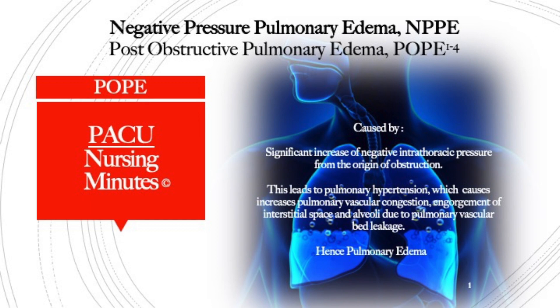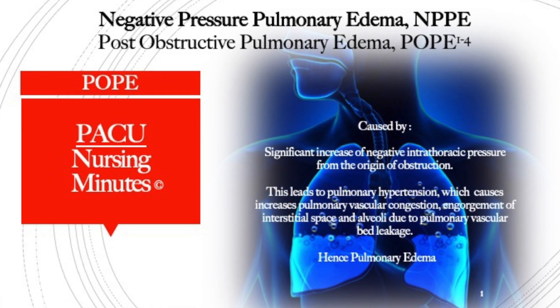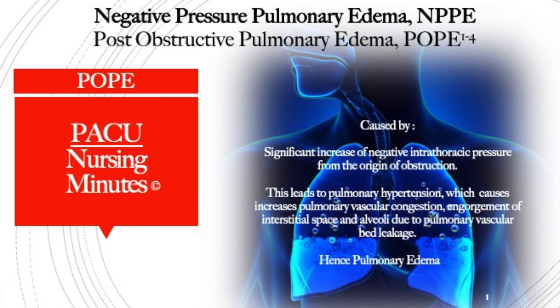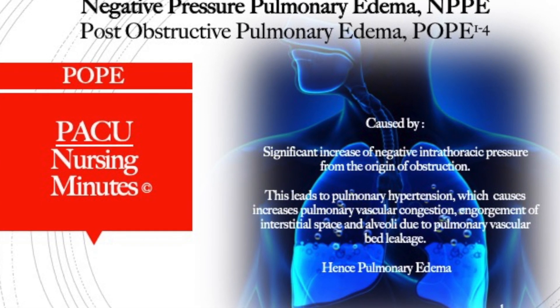It's not cardiac in origin and it is related to an obstruction. What happens is the patient develops a significant amount of intrathoracic pressure, and that massive rise in intrathoracic and interpleural pressure causes vascular engorgement. That vascular engorgement causes pulmonary hypertension, which leads to vasoconstriction, which then eventually leads to fluid shifting into the interstitium and into the alveoli, causing pulmonary edema.